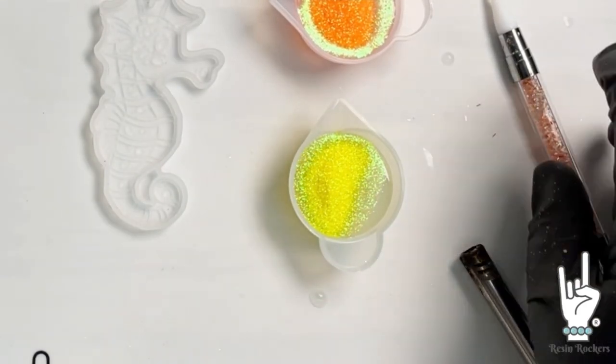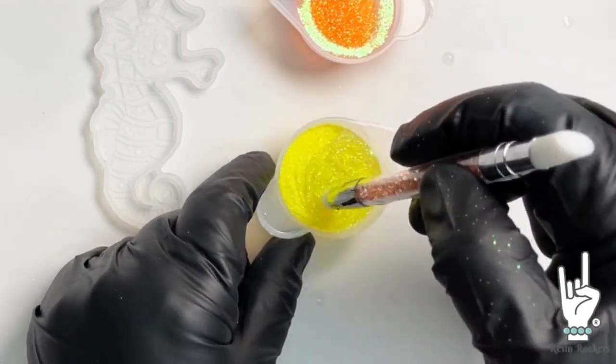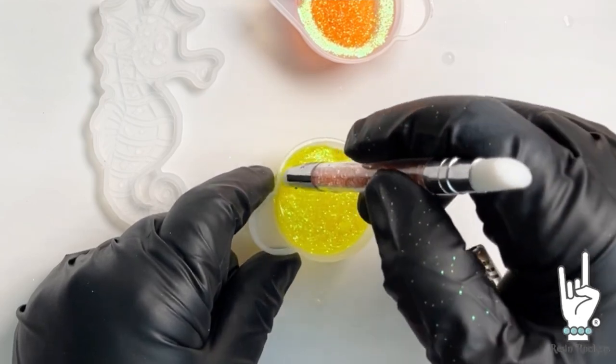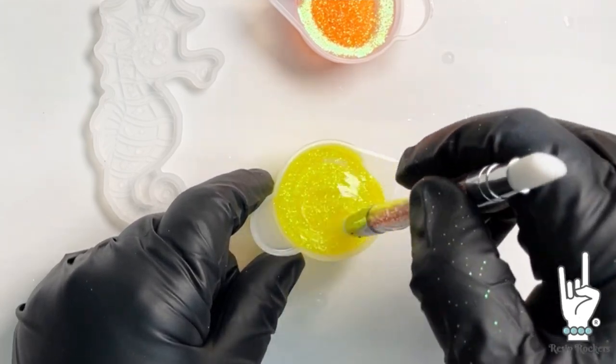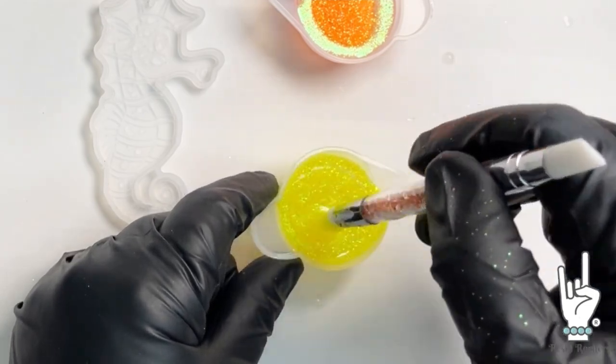Once you add the colors of glitters of your choice, go ahead and stir those into your resin. We're going to stir a little bit slower. We are casting in a mold, so we want to minimize the amount of bubbles that we are creating while we're doing this.